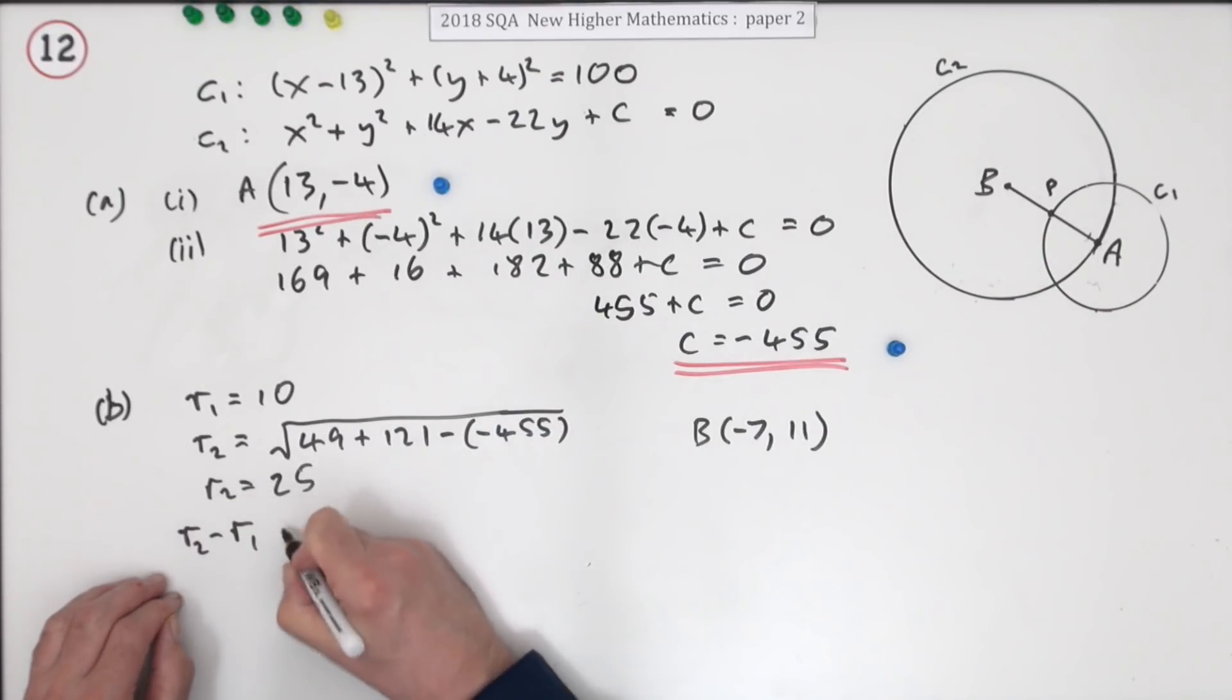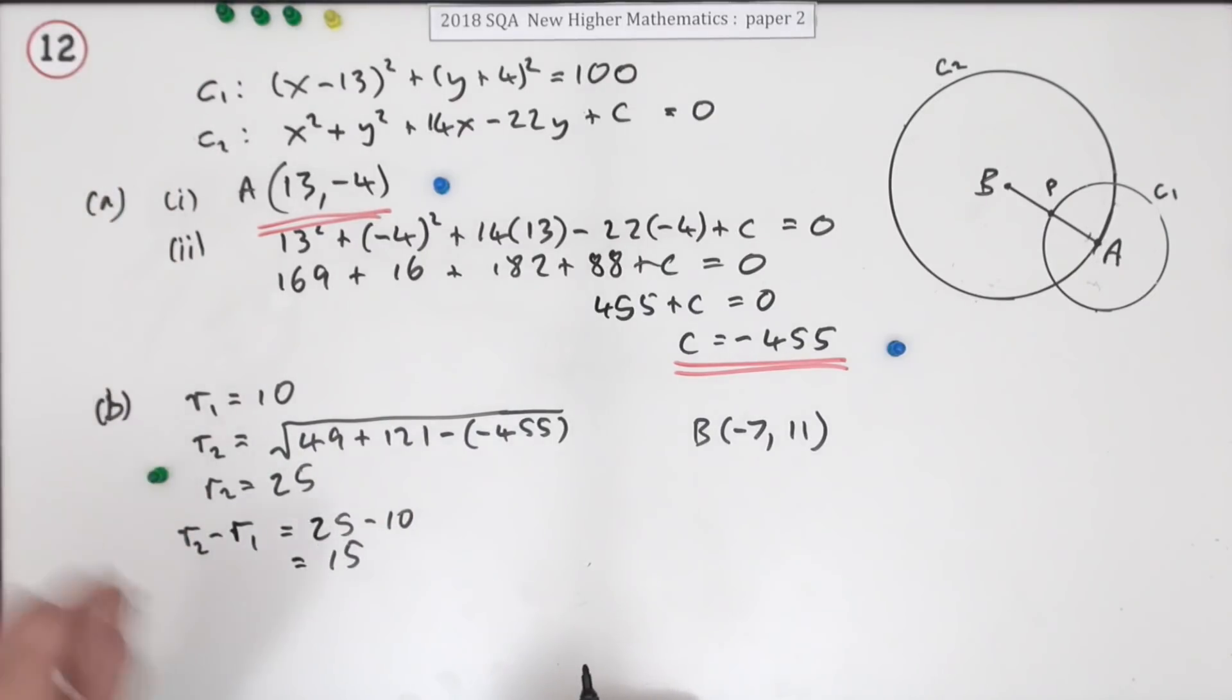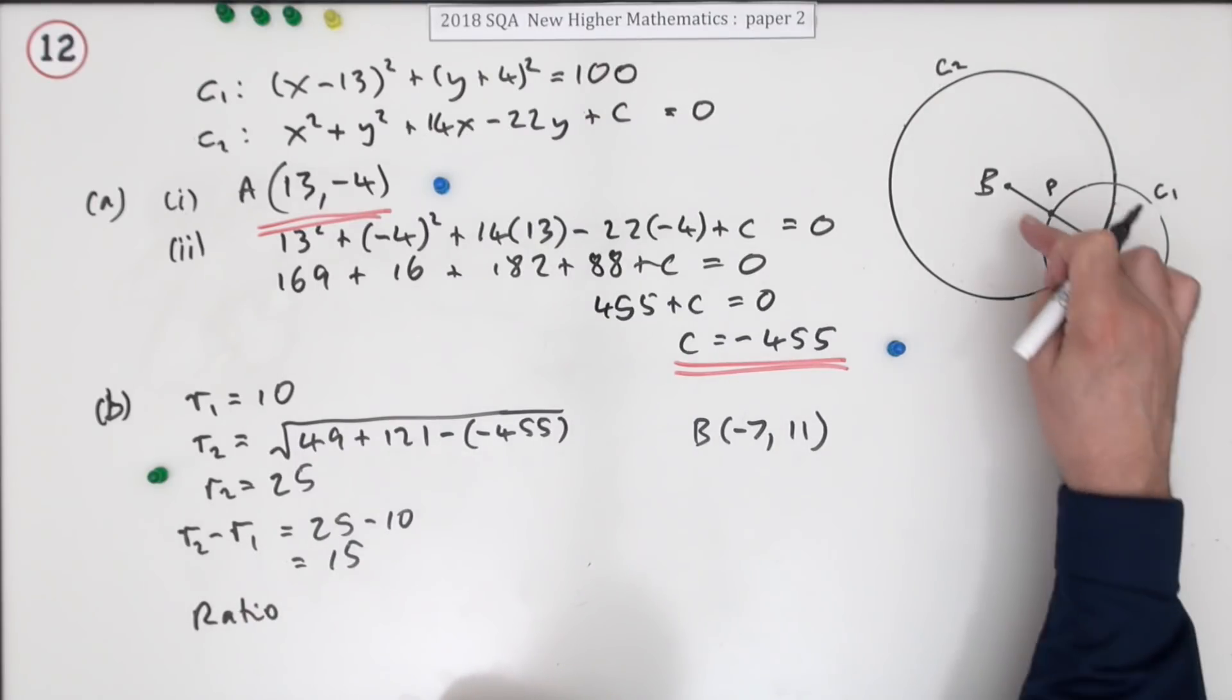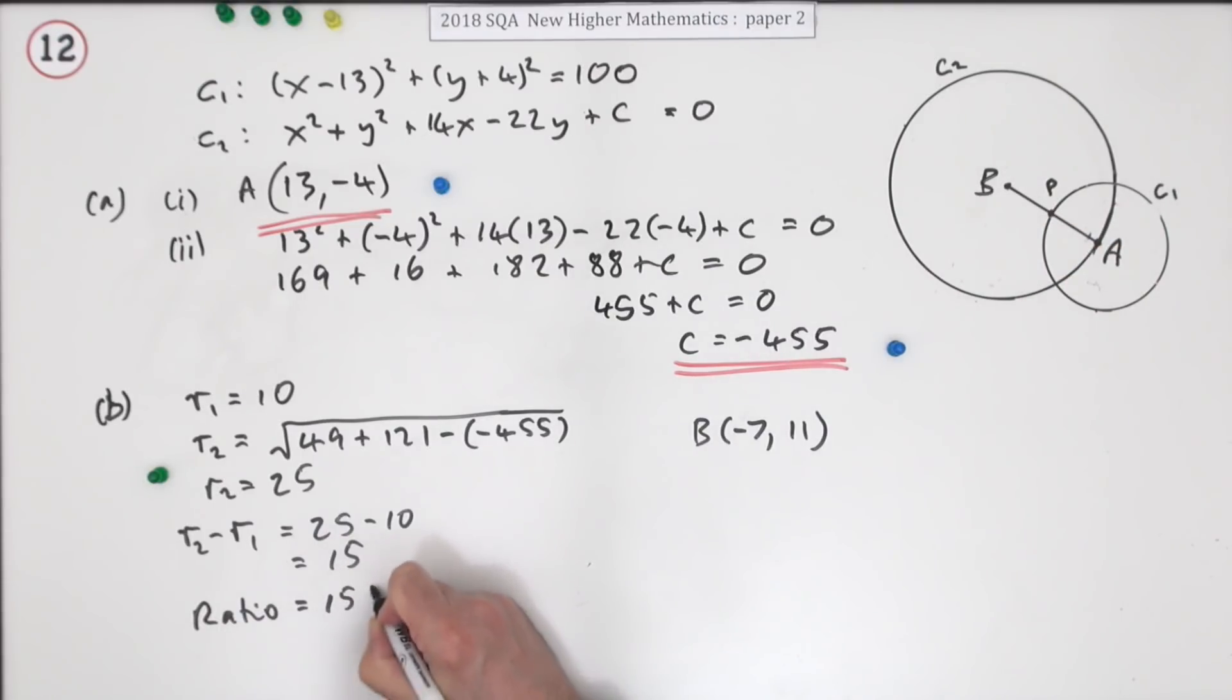R2 minus R1 is 25 minus 10, which is 15. There's a mark for working out these radii and the difference. That means the ratio is 15 to 10, which should be cancelled down. They both divide by 5, so it's 3 to 2. That's the other mark.